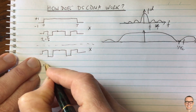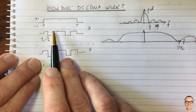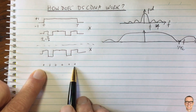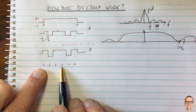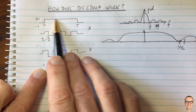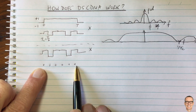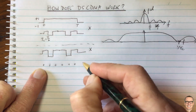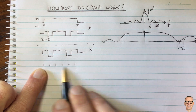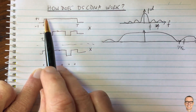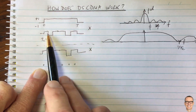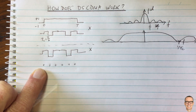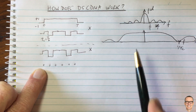What we're getting is a multiplication: plus one times plus one gives plus one, minus times minus gives plus, plus times plus gives plus, and so on. When multiplying with our sequence we're always getting a plus. Each chip is one sixth the energy of the full symbol over that time, and when we sum them up we get plus one, corresponding to having sent a plus one. If we'd sent a minus one, all of these would be minus, and summing them gives minus one.